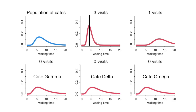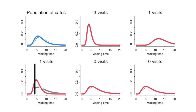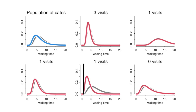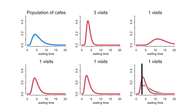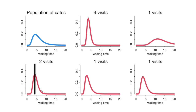We can keep doing this, and after three visits to cafe alpha it sure looks like cafe alpha is the better cafe. Adding even more cafes — gamma, delta, and omega — the golem hasn't been to them yet but it has a prior informed by the population distribution. It now expects more variation, so the prior for these three unvisited cafes is flat and long. As the golem visits them and updates, all the cafes move a little bit no matter which cafe it goes to, as does the population estimate.